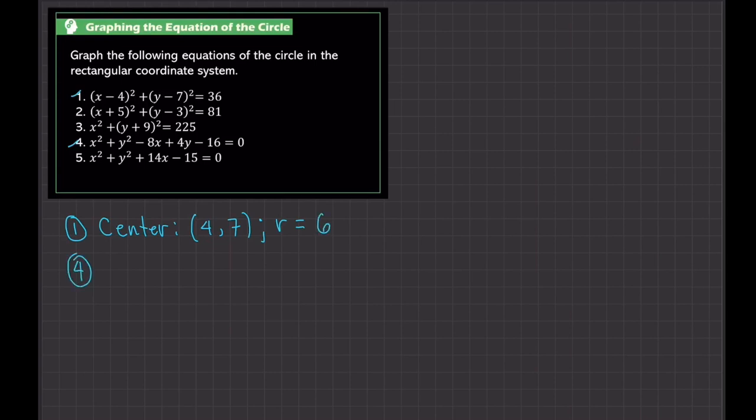And for number 4, this is in general form. We've already converted this one into standard form in the previous video. And the center, by the way, the standard form is (x-4)² + (y+2)² = 36.